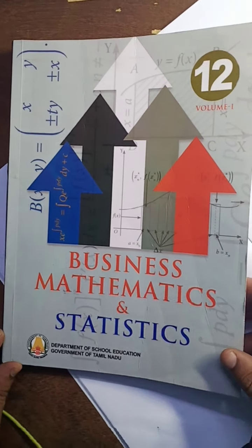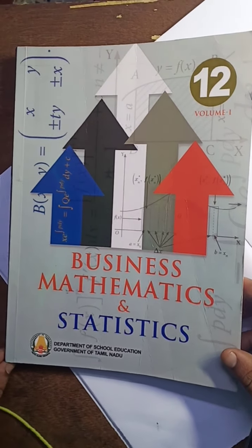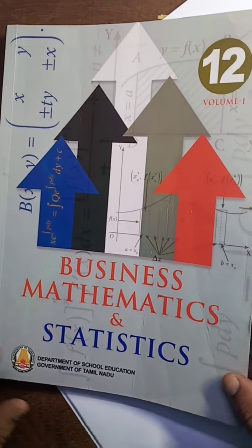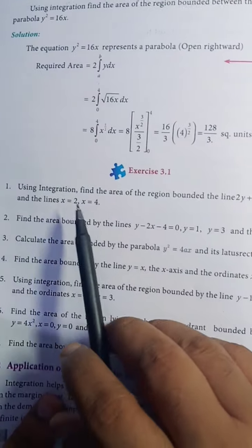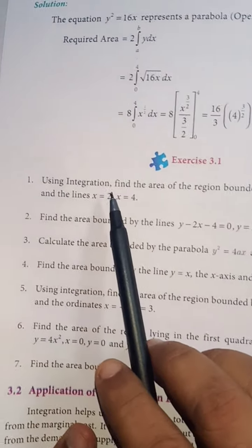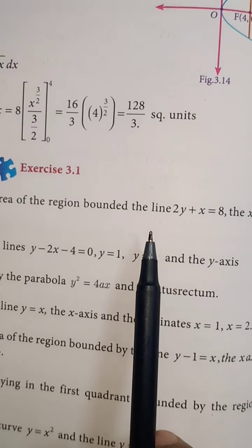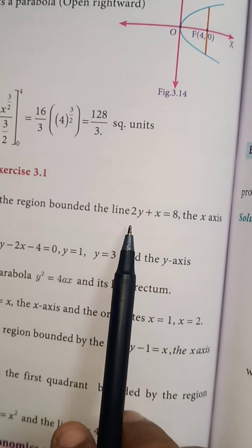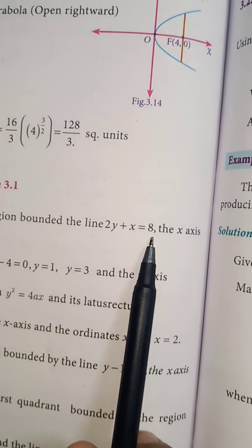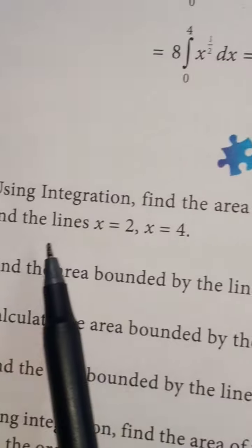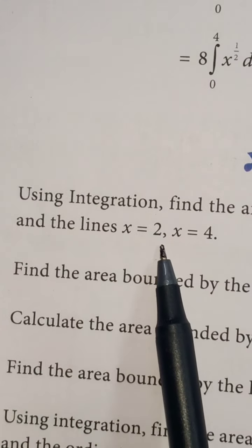Hi students, this is Sivakumar. 12th standard Business Mathematics and Statistics, Chapter 3, Exercise 3.1. Here is the question: using integration, find the area of the region bounded by the line 2y plus x equals 8, the x-axis, and between the lines x equals 2 and x equals 4.